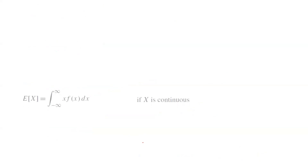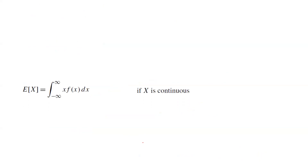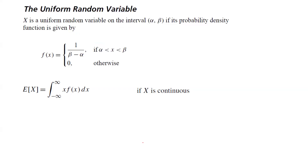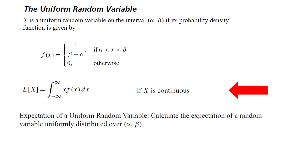Now we are interested in calculating the expected value. For a continuous variable, the expected value is equal to the integral of x times f of x dx, with x bounded between negative infinity to infinity. For a uniform random variable, f of x is 1 over beta minus alpha as long as x is bounded between alpha and beta, so the expectation is the integral of x divided by beta minus alpha, with x bounded between alpha to beta.